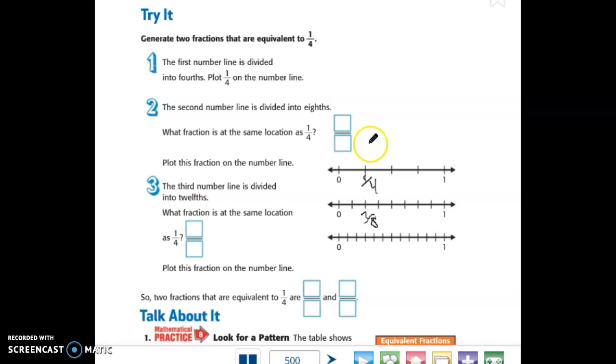So two-eighths, what we're saying is the two-eighths and the one-fourth are going to line up. Now we're also going to figure out what lines up on the twelfths. Let's see, divide into twelfths. So here's their zero. That's not going to count as one. That's zero. So one, two, three. So now I've got three twelfths.